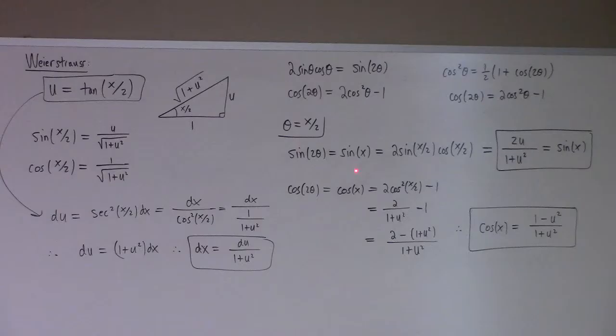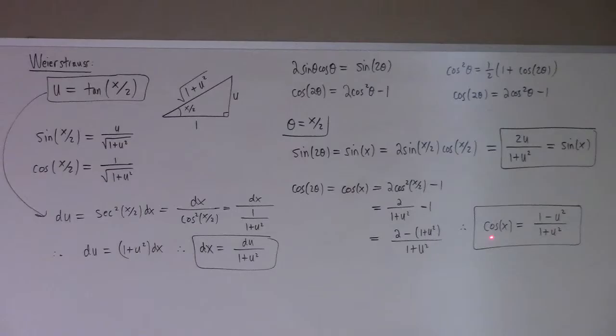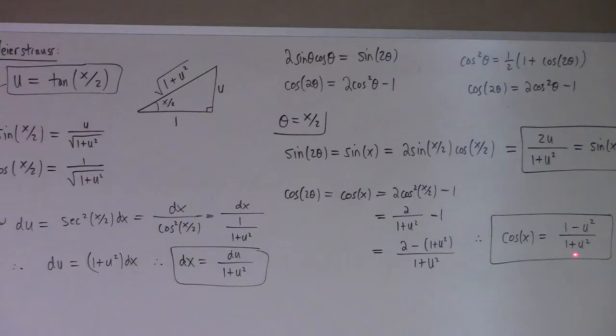Now I'm actually interested in sine x and cosine x. How do I relate those to x over 2? I use these double-angle formulas — sine of 2 theta is 2 sine cosine. So if we look at sine of 2 theta and put theta equal to x over 2, that gives us sine of x, which is 2 sine(x/2) cosine(x/2). That's this times that, which leaves me with 2u over 1 plus u squared.